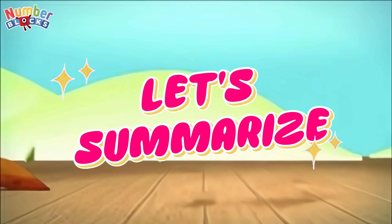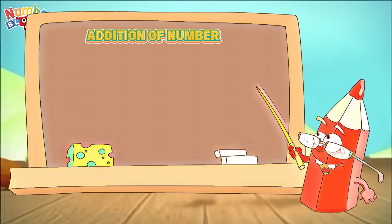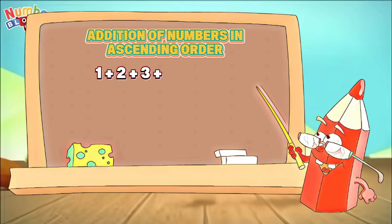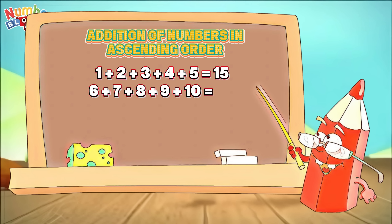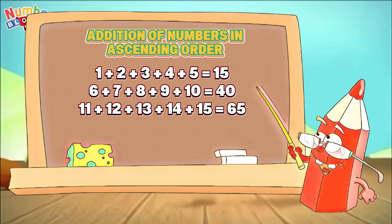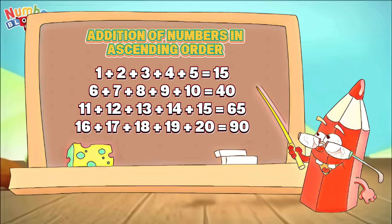Let's summarize: one through five equals fifteen; six through ten equals forty; eleven through fifteen equals sixty-five; sixteen through twenty equals ninety.